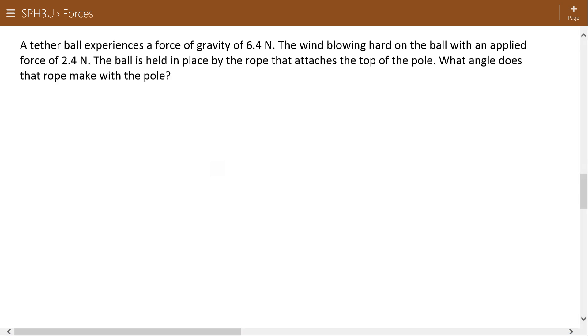All right, another Newton's First Law example here. A tether ball experiences a force of gravity of 6.4 newtons. The wind is blowing hard on the tether ball with an applied force of 2.4 newtons. The ball is held in place by a rope that attaches to the top of the pole. What angle does the rope make with the top of the pole?